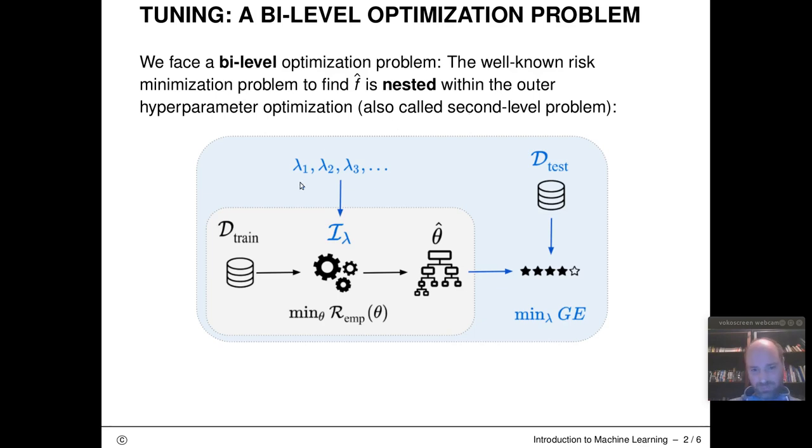So the whole reason that this is of such a nested structure is that the input of our training algorithm I here is not only the training data set D-train, it's also this lambda configuration vector that we need to fully specify what I should do.